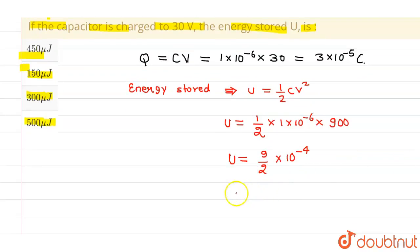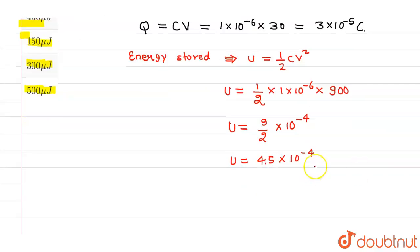Now, 9/2 is nothing but 4.5 × 10⁻⁴. And if you multiply it and divide it by 100, then you can say this can be written as 450 × 10⁻⁶ Joules. And this can further be written as 450 microjoules.